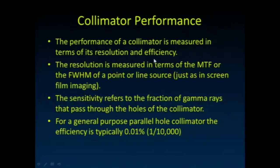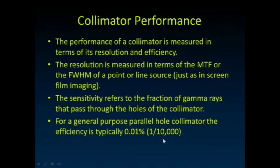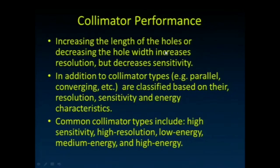Collimator performance is measured in terms of resolution and efficiency. Resolution is measured with bar phantoms, modulation transfer functions, or by imaging a point or line source and measuring the full-width at half-maximum. Sensitivity refers to the fraction of gamma rays that pass through the holes. In most general-purpose collimators, less than one in 10,000 gamma rays exiting the patient actually makes it through the collimator holes — a similar inefficiency to x-ray imaging. Increasing the hole length improves resolution but worsens sensitivity, just as with the grid.